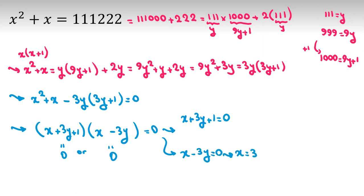So in this case, x is 3y. And y is what? y is 111. So I can say x is 333. One answer is this.